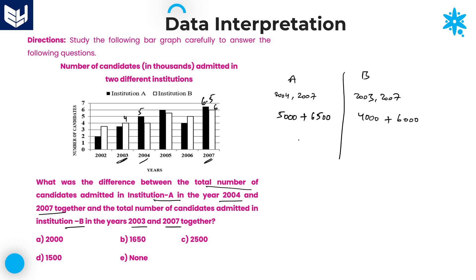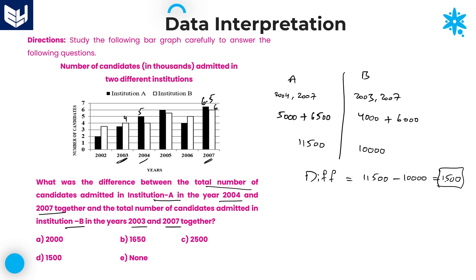Adding: 5,000 plus 6,500 equals 11,500. And 4,000 plus 6,000 equals 10,000. The required difference is 11,500 minus 10,000, which equals 1,500. That is the required difference between A's 2004 and 2007 total and B's 2003 and 2007 total. Option D is the right answer.